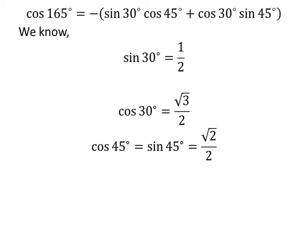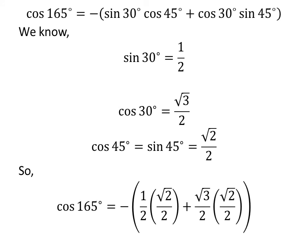As we know, sine of 30 degrees is equal to one half, cosine of 30 degrees is equal to square root of 3 over 2, and cosine of 45 degrees is equal to sine of 45 degrees is equal to square root of 2 over 2. So we plug these values in the above equation. We get cosine of 165 degrees is equal to minus one half times square root of 2 over 2, plus square root of 3 over 2 times square root of 2 over 2.